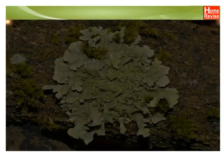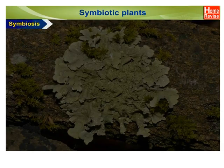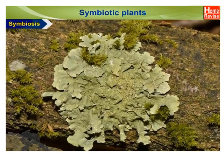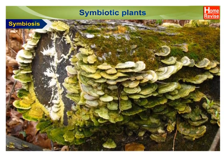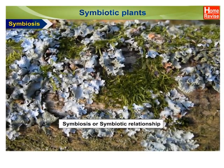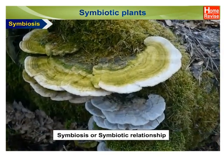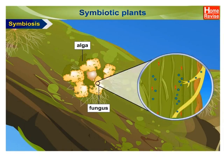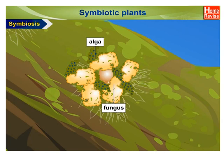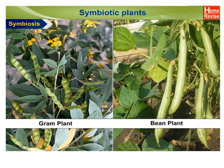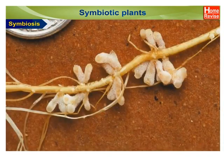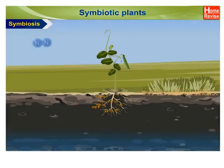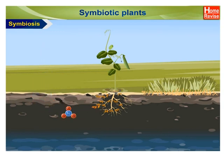Symbiosis occurs when two organisms live together by sharing shelter and nutrients and mutually helping each other; this association is called symbiosis, and the organisms are called symbionts. In lichens, an alga and a fungus live together and derive nutrients from each other — the alga, being autotrophic, makes food for both by photosynthesis, while the fungus provides shelter, water, and minerals. Roots of leguminous plants like gram and beans contain nodules having rhizobium bacteria; these bacteria convert atmospheric nitrogen into nitrates which are used by the leguminous plants.